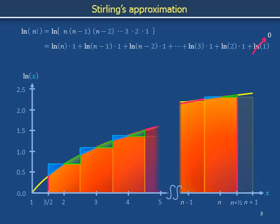When n is large, many of the golden rectangles described by the sum are well approximated by their associated portions of the red area. We approximate the natural log of n factorial — which is the area of the golden rectangles — as equal to the area under the plot of the natural log of x from x equals 3/2 to x equals n plus 1/2. This is the integral from x equals 3/2 to n plus 1/2 of the natural log of x dx.